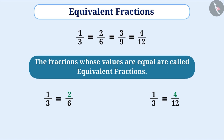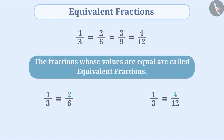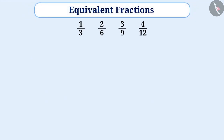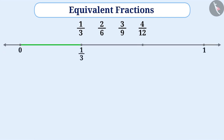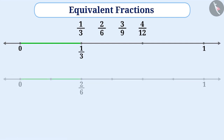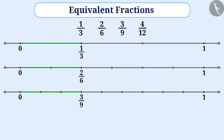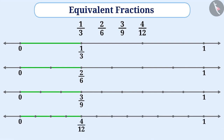Now, let's try to represent these fractions on the number line. If you look at these fractions, they may appear different to you. But if we represent them on the number line — representing 1 third, 2 sixths, 3 ninths and 4 twelfths — then we can observe that all these fractions are marked at a similar point on the number line. We can understand that the value of all these fractions is equal, meaning all these fractions are equivalent fractions.